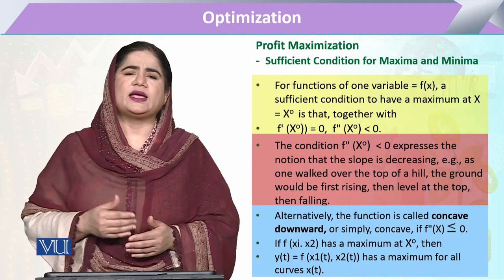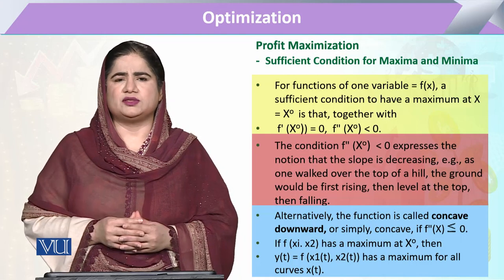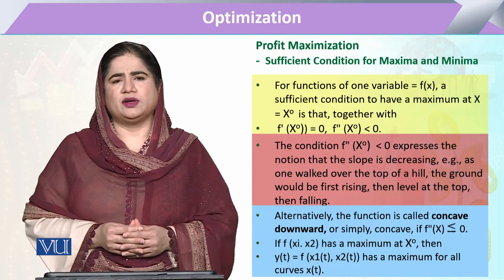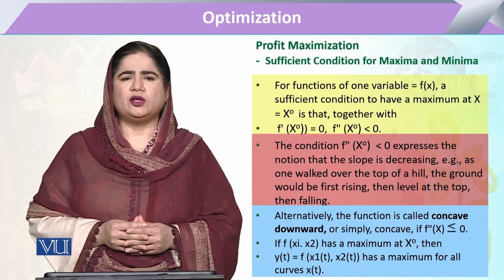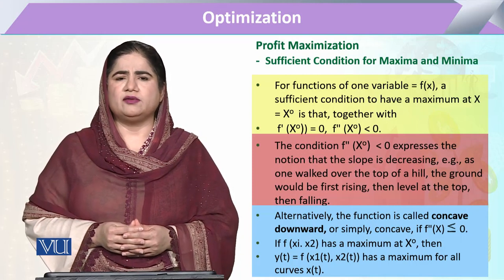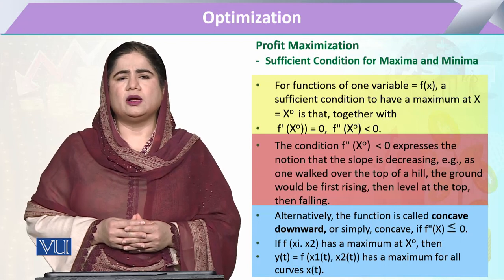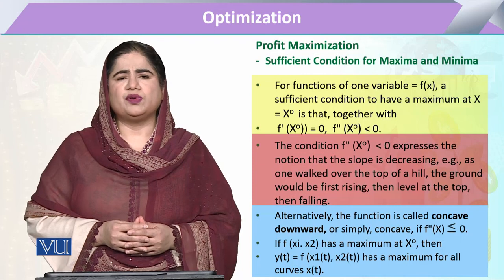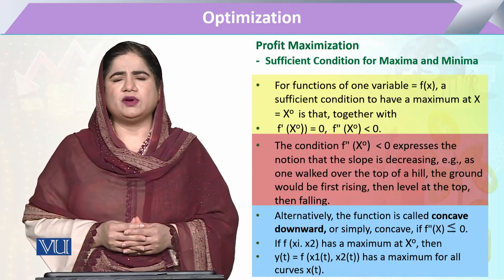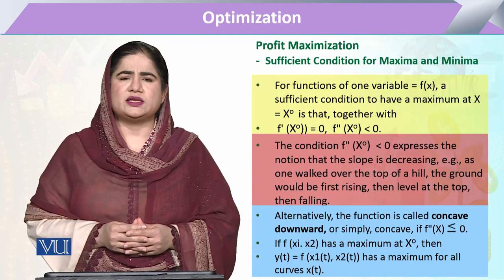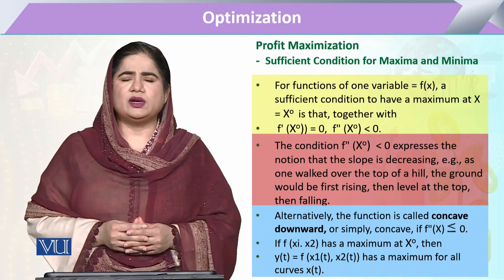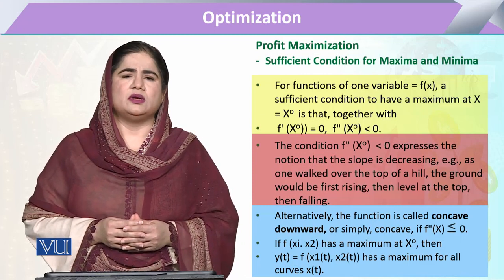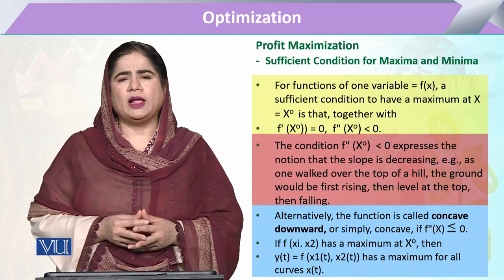For that, we use the second derivative or second differentiation to measure the slope. When the second derivative shows a value less than 0 — that is, negative — it indicates that the function, after attaining stationarity, is now moving downward. So the first derivative equal to 0 is the necessary condition, but the sufficient condition to ascertain that the point is a maximum is that the second derivative must be less than 0, or negative.